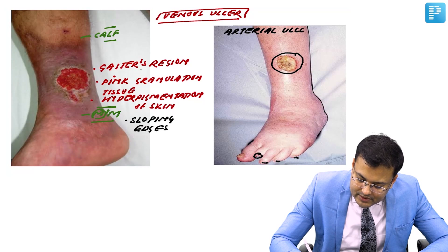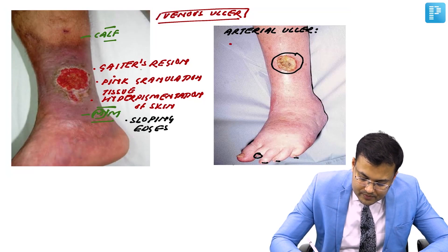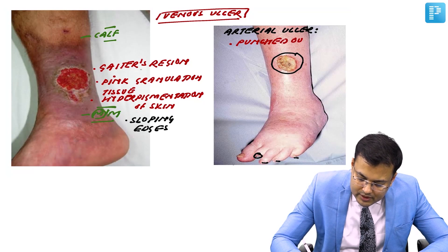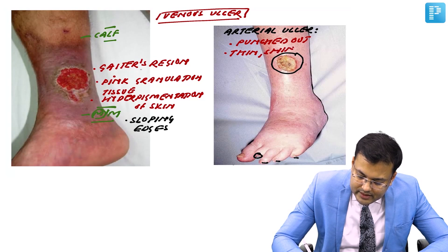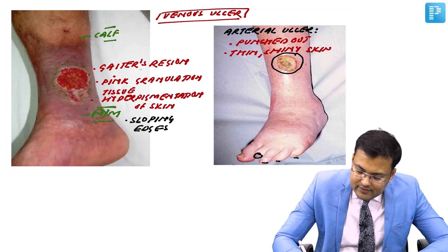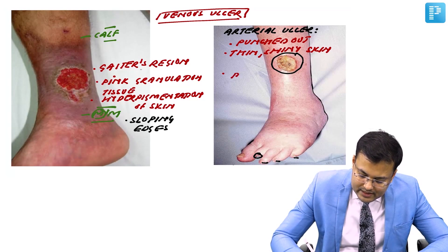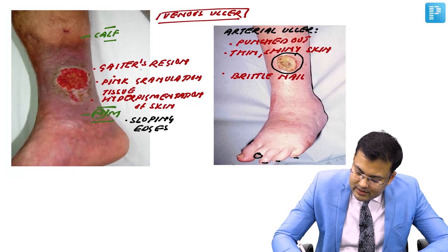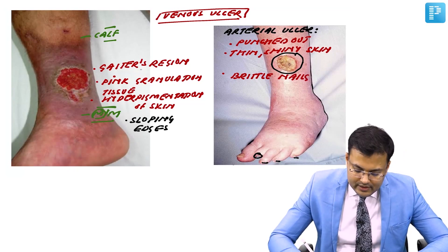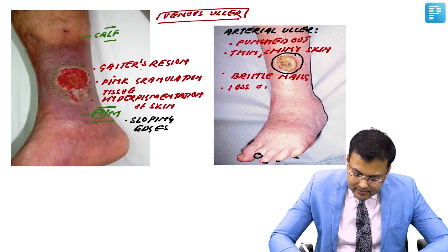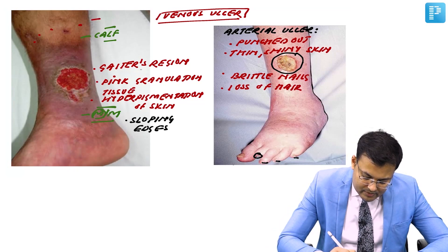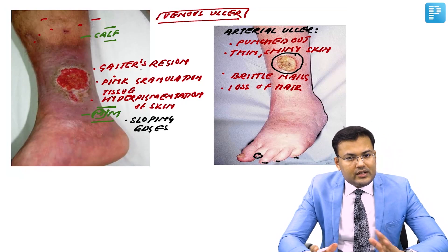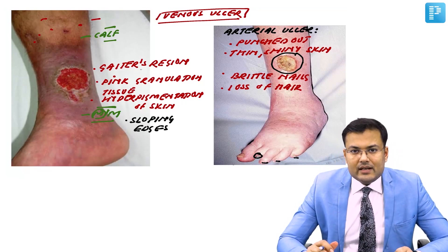The appearance of an arterial ulcer is punched out. There are signs of ischemia: thin, shiny skin, brittle nails, and loss of hair. You can notice there is no hair in the affected area, in contrast to normal skin where hair is present. These are the differences between venous ulcers and arterial ulcers.